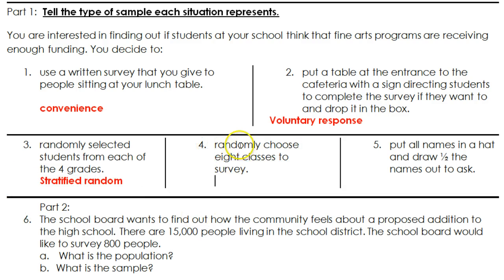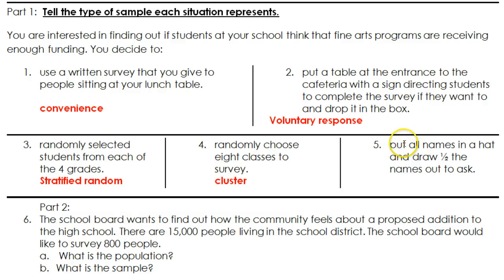Number four: you randomly choose eight classes to survey. This is going to be the cluster method. Number five: you put all names in a hat and draw half of the names out to ask. That's going to be simple random, since every single person had an equal chance of being picked.